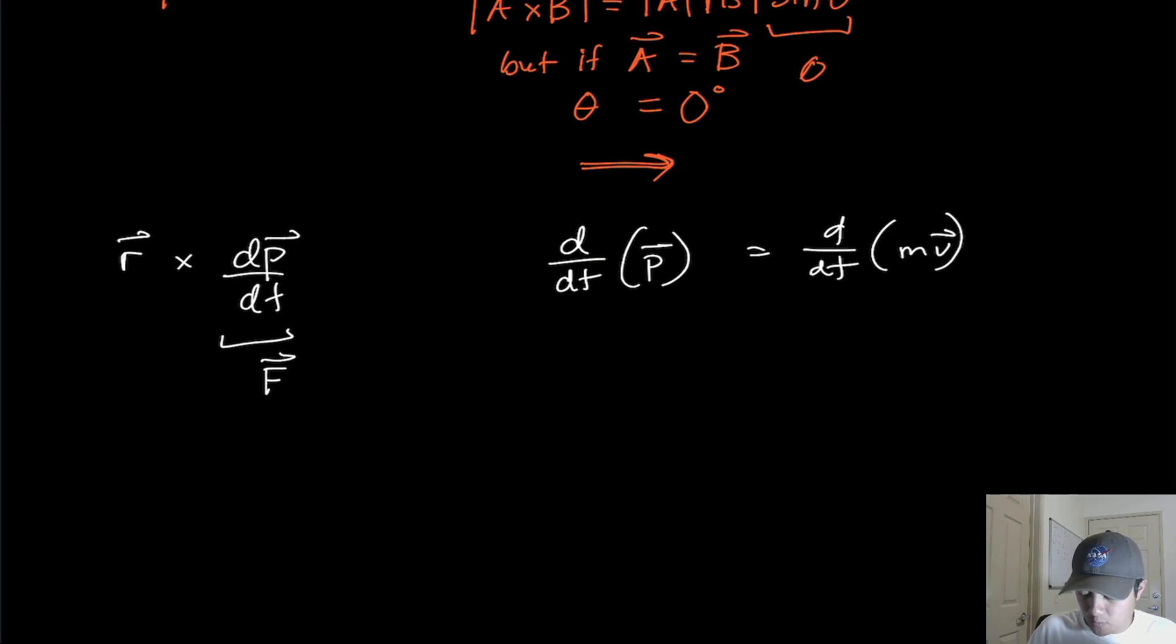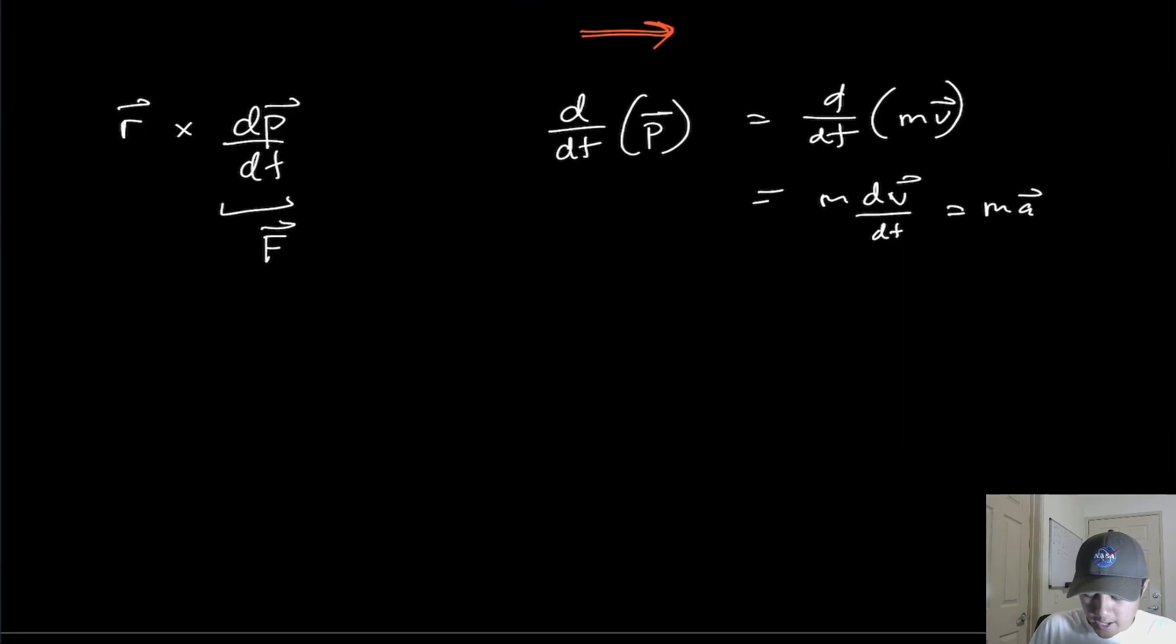Now, if we assume the mass is constant, then we can pull that out and we'll have mdv/dt, which is equal to ma. Okay? Now, this only works for a mass that is constant, but in this problem we're going to assume just that. So we can show that the dp/dt is just equal to F. So we have R cross F.